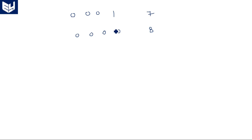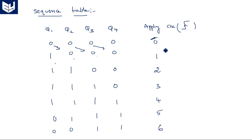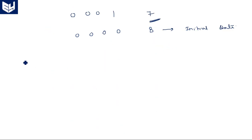When the eighth clock pulse is applied, all outputs return to zero — the initial state from which we started. So this Johnson counter counts from 0 to 7, which means it counts 8 clock pulses total.